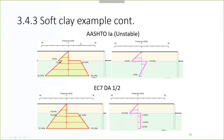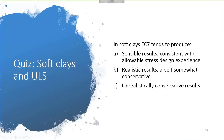Similarly, when we look at AASHTO load combinations — Combination 1A — AASHTO also becomes unstable on this shallow excavation. There will be no way to stabilize this excavation with traditional means under these assumptions.